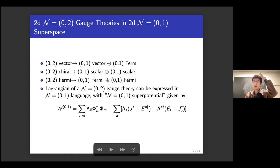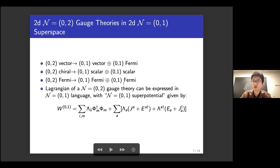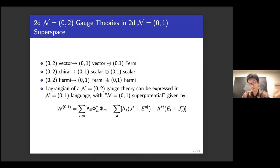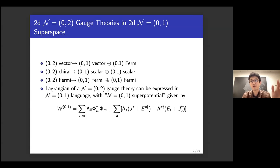To construct (0,1) theories we start with a (0,2) theory embedded in string theory. It is convenient to express how the (0,2) theory decomposes in (0,1) superspace. Every (0,2) vector multiplet decomposes into a (0,1) vector multiplet and a (0,1) Fermi multiplet. The complex Fermi field in the (0,2) vector becomes two real Fermi fields: one becomes the Majorana-Weyl fermion in the (0,1) vector, the other becomes the (0,1) Fermi multiplet. The matter multiplets of (0,2) theory decompose accordingly: every (0,2) chiral gives two scalar multiplets, and every (0,2) Fermi gives two (0,1) Fermi fields.